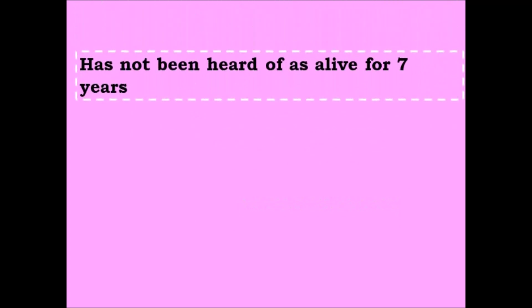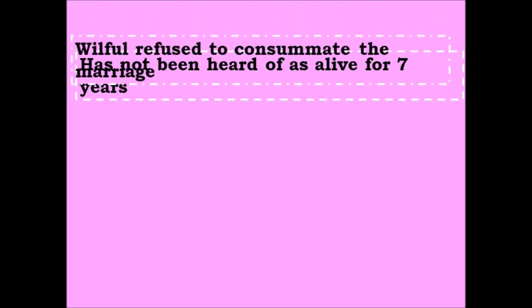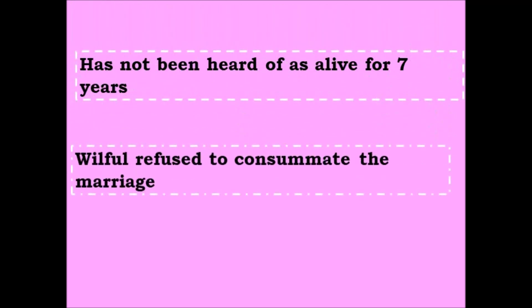Another ground is that the other party has not been heard of as alive for seven years. If one of the parties is missing, and there is no knowledge of whether they are living or not and no contact with them, then the other party has a ground for divorce. There is also the ground of willful refusal to consummate the marriage — meaning one party is not willing to live as husband or wife — and that is also a ground for divorce.